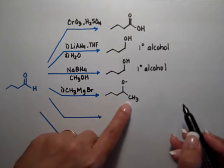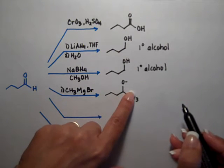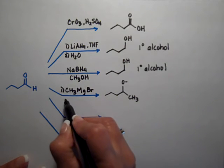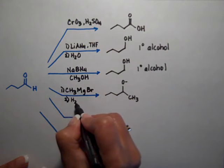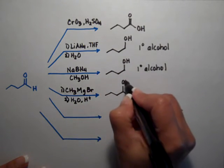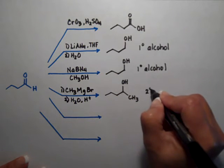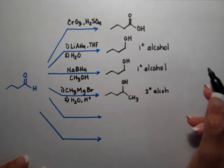The tetrahedral intermediate doesn't have any good leaving groups. Carbons are not good leaving groups and the hydrogen that's there is not a good leaving group either so when you quench the reaction the hydrogen will pick up a proton from the water and that's how you end up with a secondary alcohol when you attack an aldehyde with a Grignard or an organolithium.